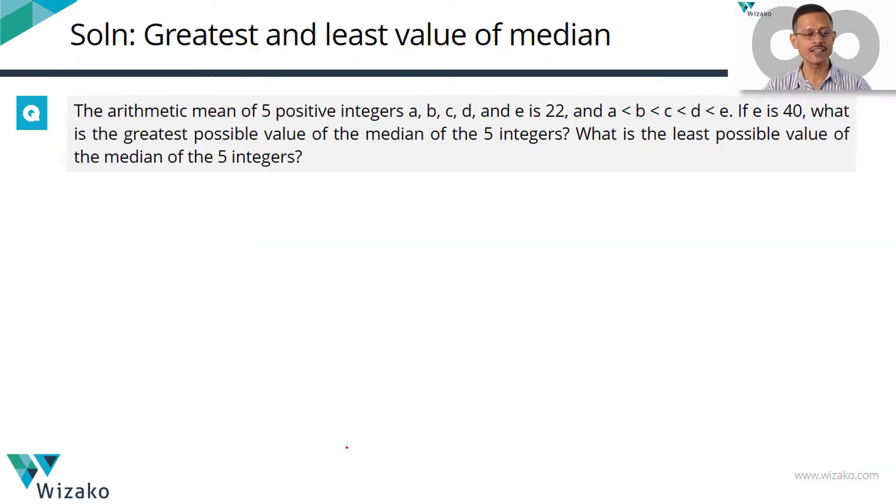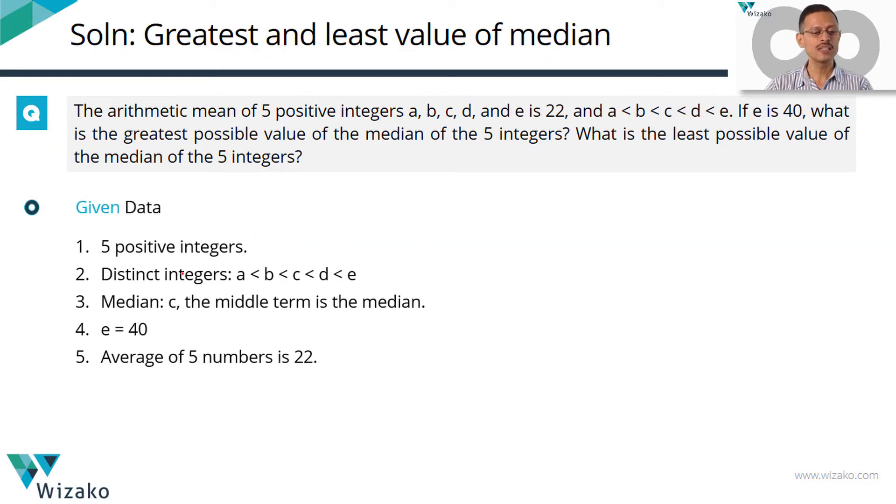Let's just jot down the data quickly in a tabular form so that we know what we are talking about. We have five positive integers. These numbers are in ascending order: A is less than B is less than C is less than D is less than E, which means these are distinct integers. The median for these five numbers is the middle term, which is equal to C. E, the largest number, is equal to 40. And the average of these five positive integers is 22. So this is the data given to us.